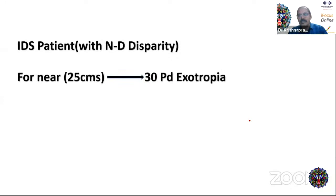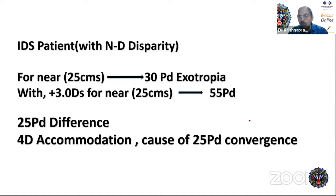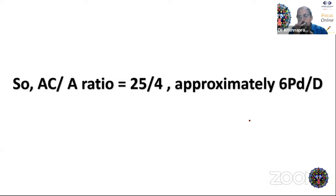The gradient method is commonly used for patients with near-distance disparity. For example, an IDS patient has 30 prism diopters of exotropia for near; adding +3 lenses increases deviation to 55 prism diopters. The difference is 25 PD for 3 diopters less accommodation (or adding +3 blocks ~3D accommodation), giving an AC/A ratio of approximately 25/4 ≈ 6 prism diopters per diopter. AC/A ratio changes with age — it improves as age advances.